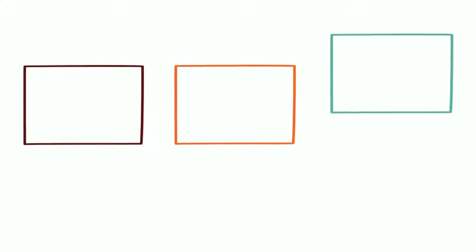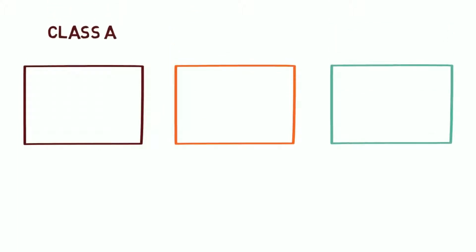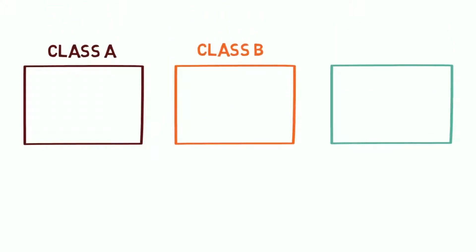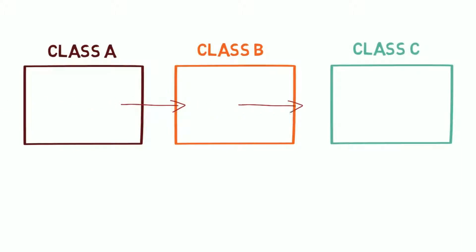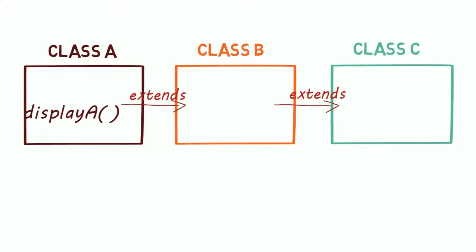Class A, class B, and class C. All these classes are inherited, and all these classes have a display method in them.